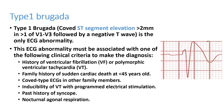Type 1 Brugada: when ECG changes are present without arrhythmia or cardiac arrest, it is only a Brugada pattern. We should be careful when starting drugs in these patients. Type 1 shows ST segment elevation more than 2 mm in V1 to V3, followed by a negative T wave — resembling RBBB with acute MI. This ECG abnormality can be associated with polymorphic ventricular tachycardia, ventricular fibrillation, and sudden cardiac death.